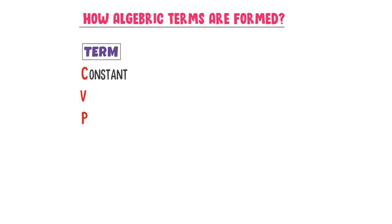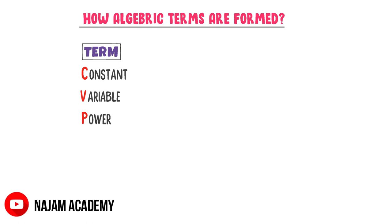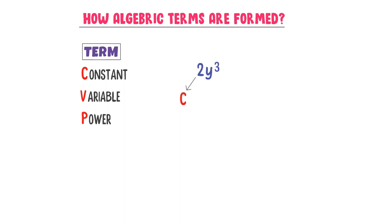For example, consider 2Y cubed. It is an algebraic term because 2 is the constant part, Y is the variable part, and 3 is the power part. The constant part of the term is made up of numbers like 2, 300,000, etc.